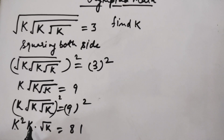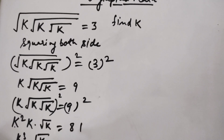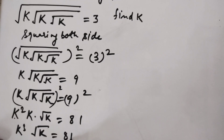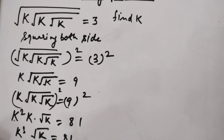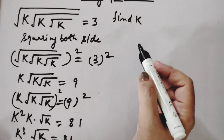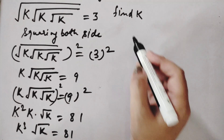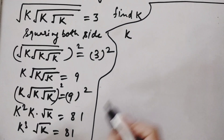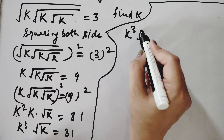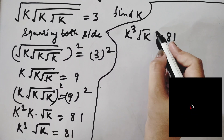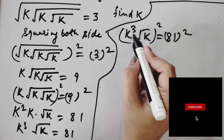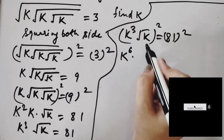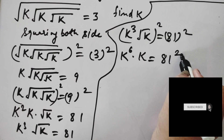After that, k times k is k squared, so we have k squared times root k equals 81. Now we will do squaring both sides again for this remaining square root. So k cubed times root k equals 81.